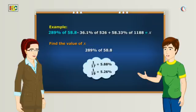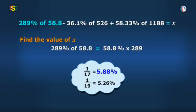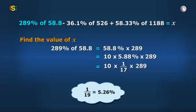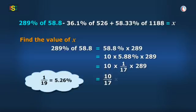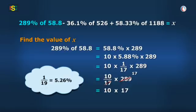Let me try this anyway. It says 289% of 58.8 or we can say 58.8% into 289 and 5.88% is 1 by 17 as you reminded me. So, it will be 10 into 5.88% of 289 or 10 into 1 by 17 of 289 that is 10 by 17 into 289. And I know 17 square is 289. So, it means 10 into 17 that is 170.